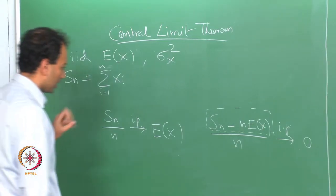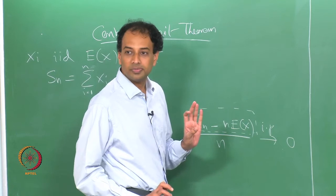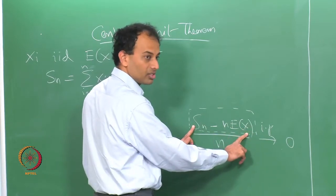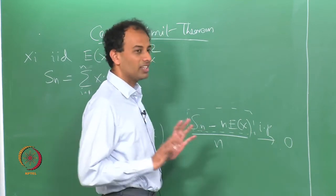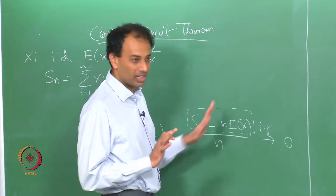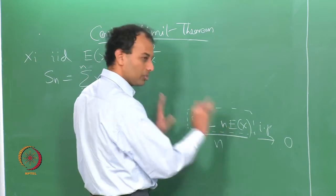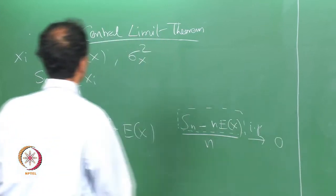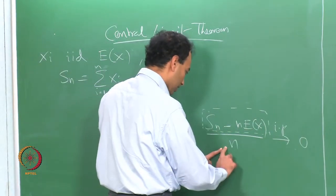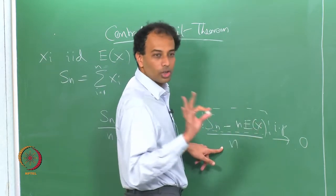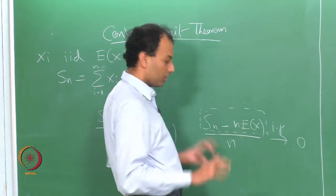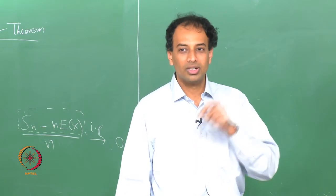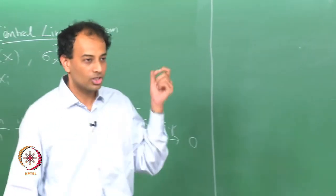The central limit theorem gives a finer characterization of this fluctuation. In particular, it says that not only is S_n minus n times the mean sub-linear in n, it further says that this difference is approximately like square root of n, if you have finite variance. Even more remarkably, since this is like square root of n, if you divide by square root of n you get something that is order 1. That order-1 term is a Gaussian fluctuation — it is an N(0,1) fluctuation.